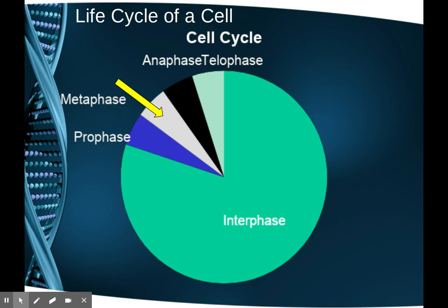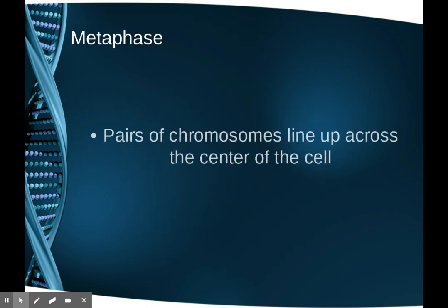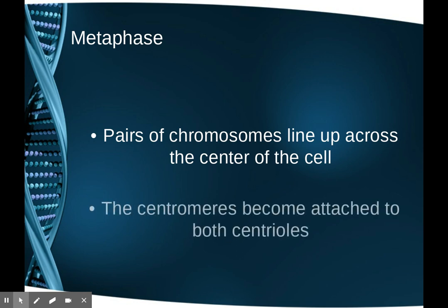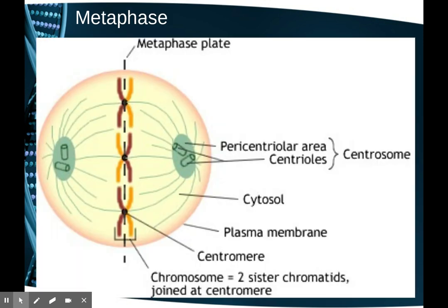Next is metaphase. In metaphase, all pairs of chromosomes are lined up completely in the center of the cell — it is the most organized of the phases. The centromeres, where the X-shaped chromosomes are joined, are now attached to both centrioles, with a spindle fiber on each side. What happens next is the centrioles begin reeling in their spindle fibers, which will rip the X's in half.